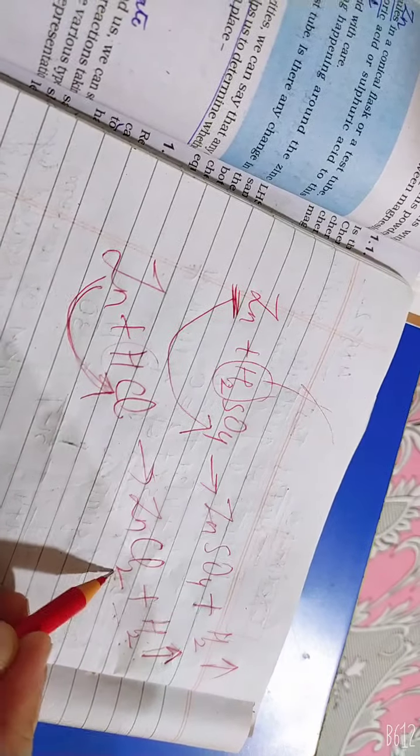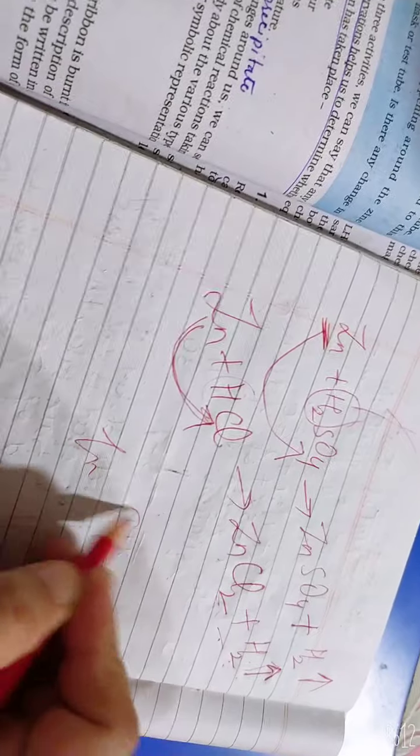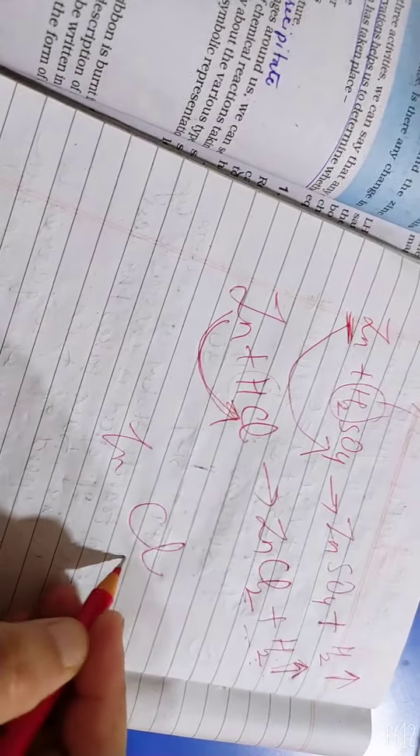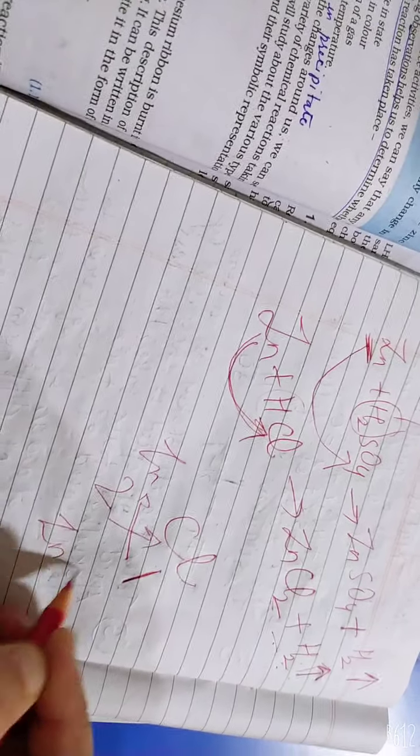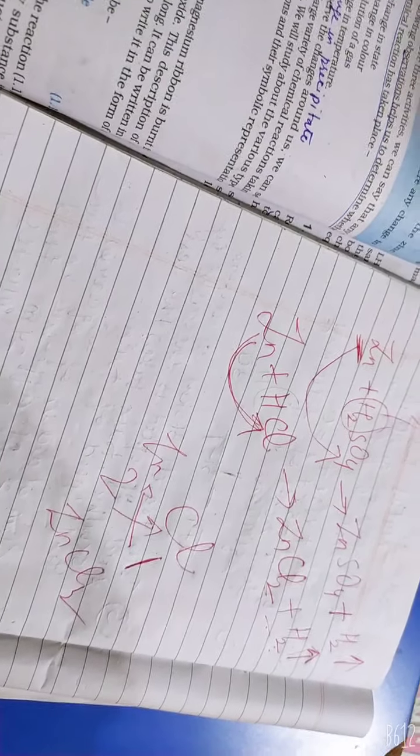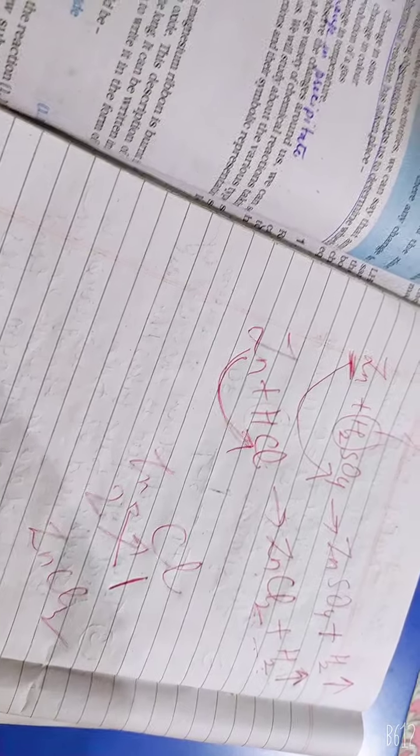And what is Cl2? Look, I have taught in your ninth class. This is ZnCl2. Chlorine is 1, Zn is 2. Cross multiply. Then what will it be? ZnCl2. Do you remember? Right? Let's move on.